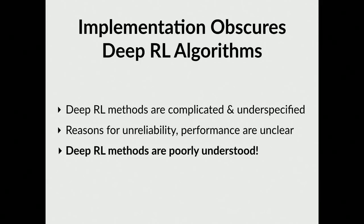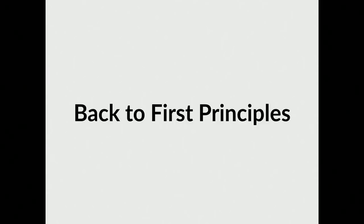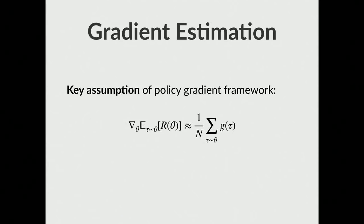Even with these seemingly small changes, performance can vary super widely. The overall takeaway is that these deep RL methods are under-specified and really complicated, and the reasons for unreliability are somewhat unclear — it's not sure if it's the algorithms or all the little optimizations put on top. This calls for us to go back to a first-principles look at what these algorithms are really doing. We'll look at four tenets: gradient estimates, value prediction, optimization landscapes, and trust regions.